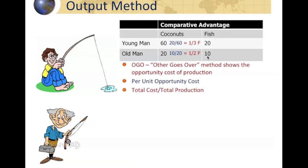For the old man, we take 10 and put it over 20, which breaks down to one-half. This means that for the old man, every time he collects one coconut — per unit opportunity cost — it costs him one-half of a fish, or it is equal to his ability to produce half a fish.